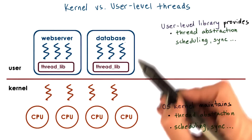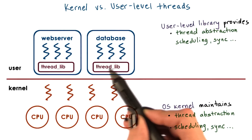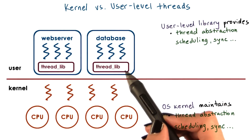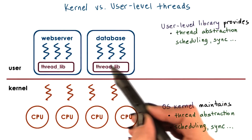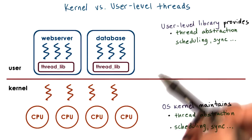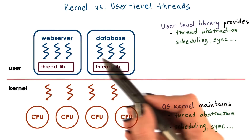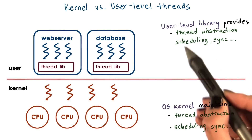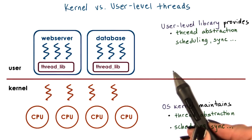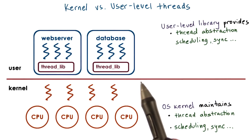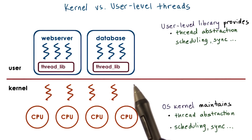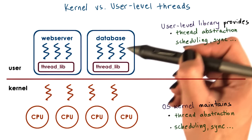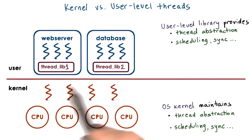Supporting threads at the user level means that there is a user-level library that is linked with the application, and this library provides all of the management and the runtime support for threads. It will support a data structure needed to implement the thread abstraction and provide all the scheduling, synchronization, and other mechanisms needed to make resource management decisions for these threads.